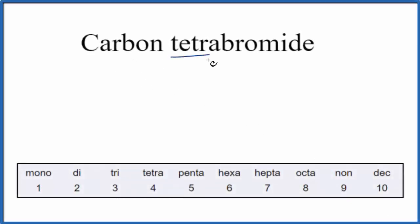To write the formula for carbon tetrabromide, we first need to figure out what type of compound we have.